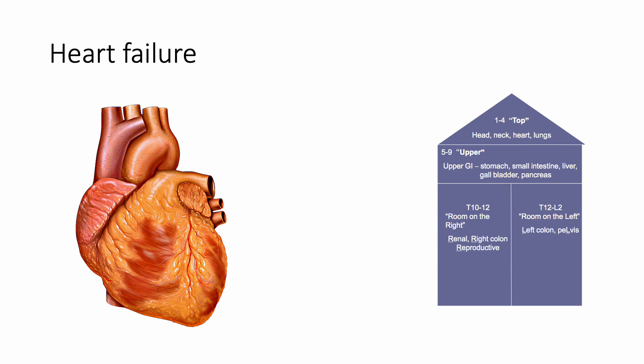Someone presents with heart failure, swelling in their legs, pulmonary edema, and dyspnea on exertion. You have answer options T1, T5, T10, T12. What is the answer? T1 through T4. The heart is in that top section of the House of Golden. See, this is easy — all you have to know is this House of Golden.